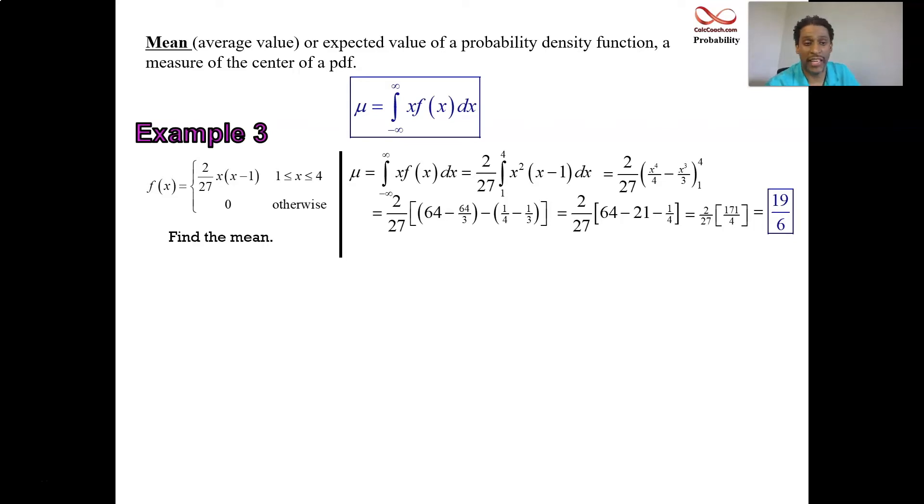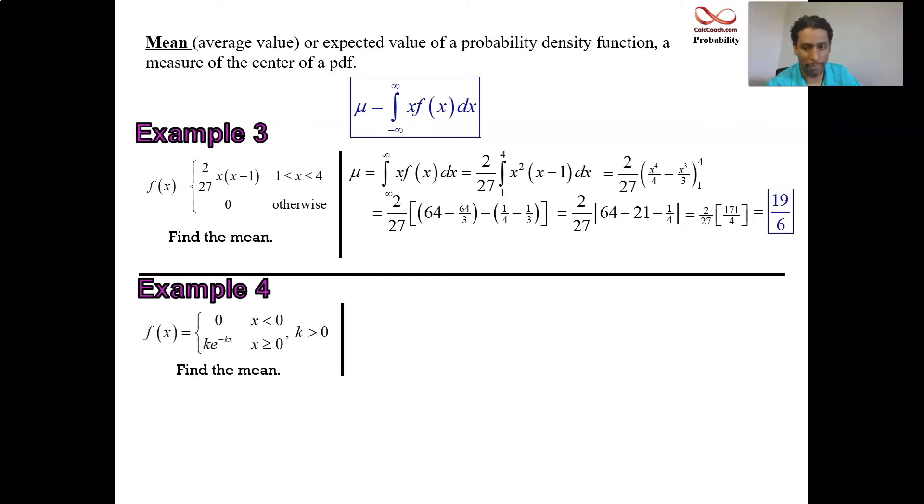And also in the second video, we saw the introduction of the exponential density function. Let's calculate its mean. So we have the function is zero, so long as x is less than zero. And then it is equal to some constant k that's positive e to the negative kx is an exponentially decaying function. And so we integrate from minus infinity to infinity, but this integral here is going to be from zero to infinity because the function is zero for all of the negative values.